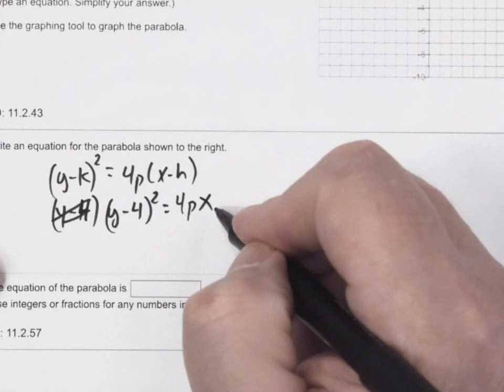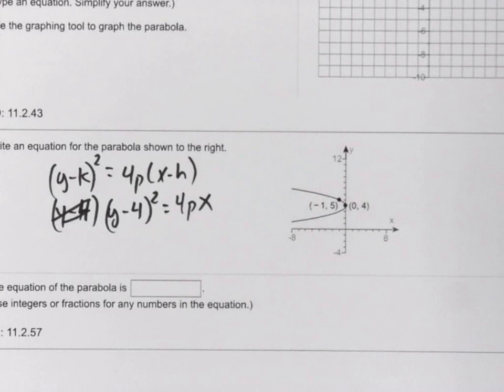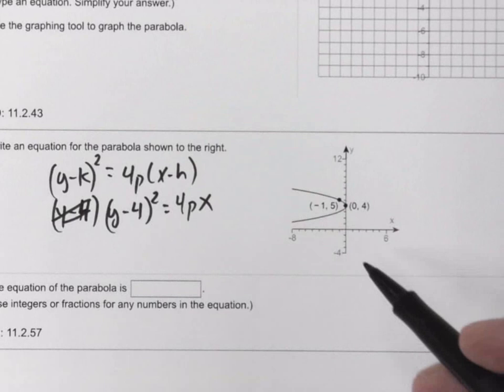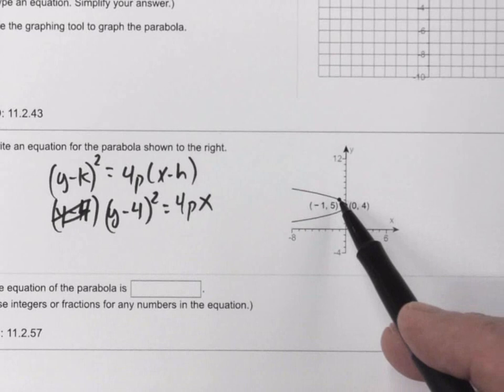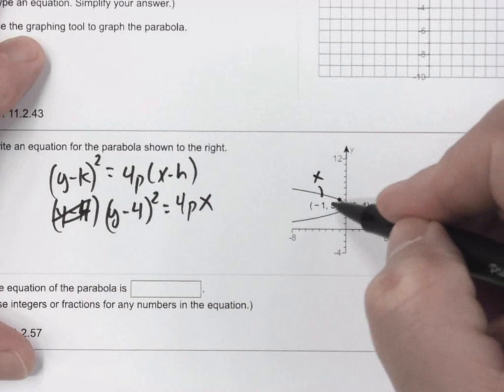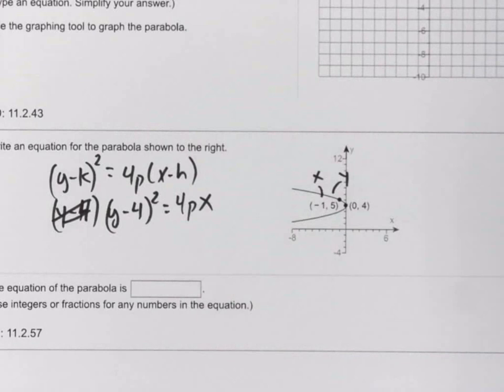I don't know p. Since h is 0, so now we have (y - 4)² = 4px. If I find the value of p, then I've got the equation. Well, they haven't really given me anything that I can look at this graph to get p. But since they've given me a point on the graph, what I can do is I can take my equation. I can plug in -1 for x and 5 for y. When I do that, then I can solve for p. And then once I know p, then I'll have the equation.